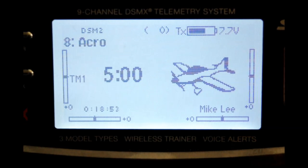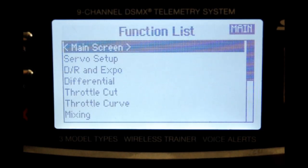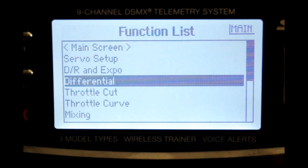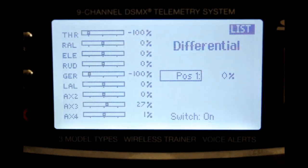Now we go to our DX9, and starting from the operational screen, we're going to go into our functional screen. Depress the scroll switch once. We're now in the function list. Find differential, which is right in the middle, and scroll down to that. Depress the scroll switch once. Now you're in the main menu for differential. Your cursor is here up on list.